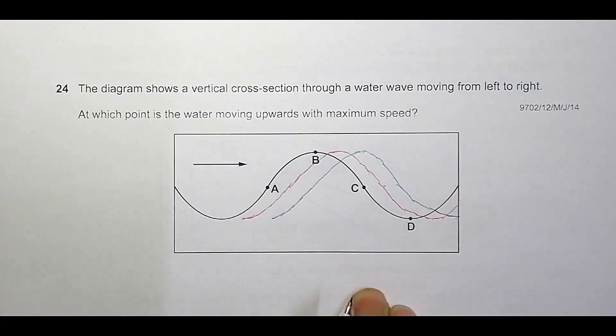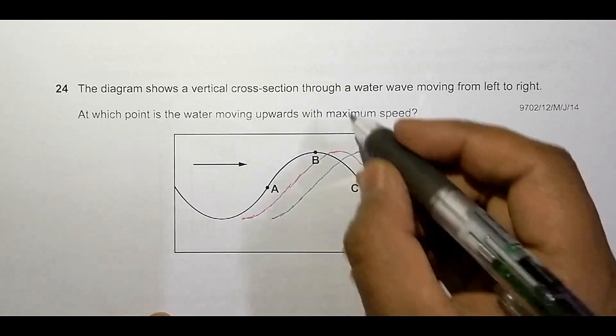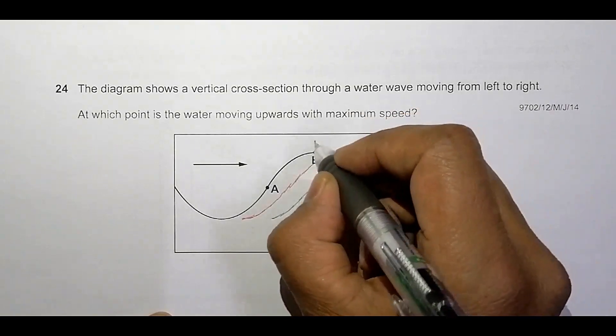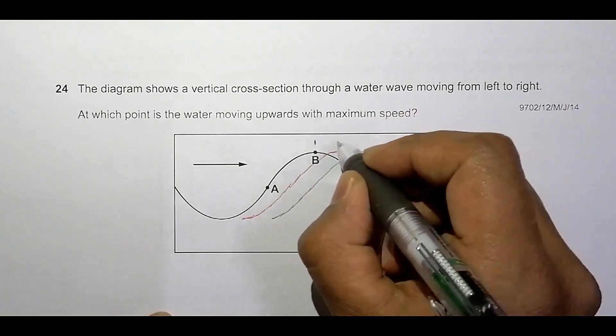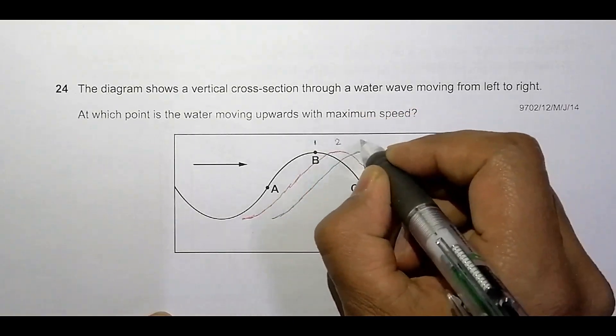So these are the two waves after some instant. This is at instant one, instant two, and instant three.